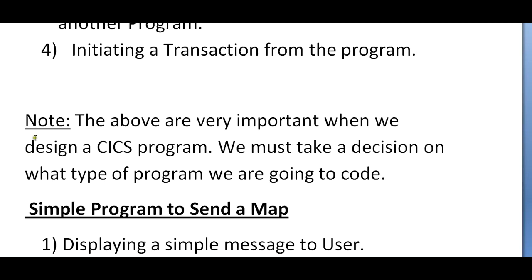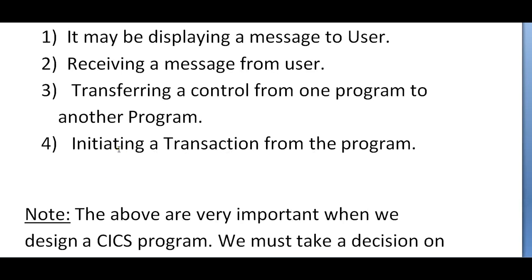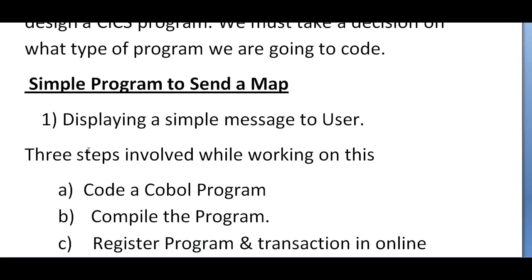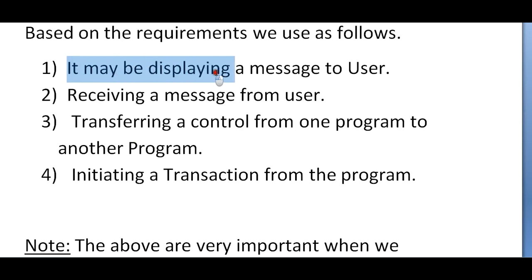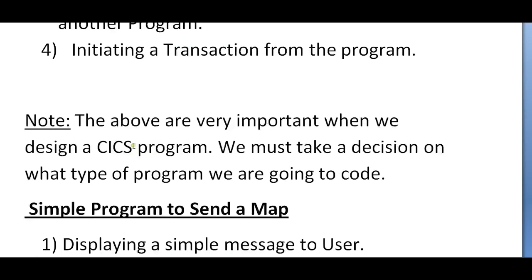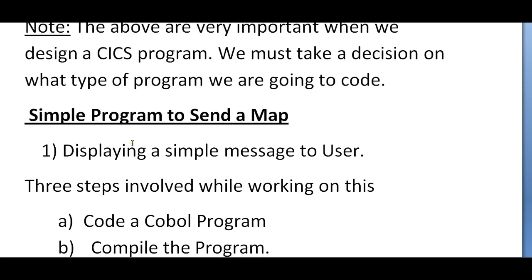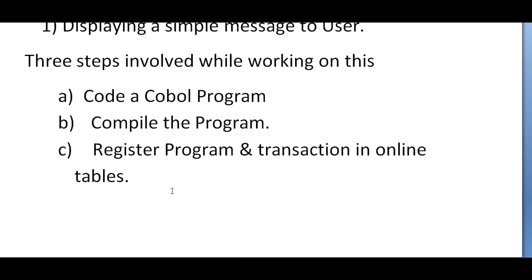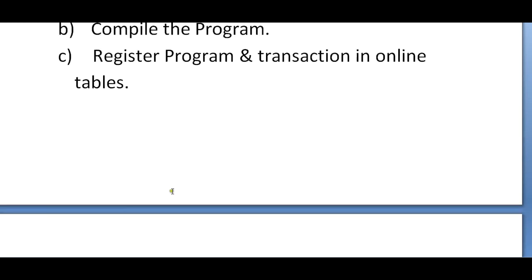These four types are very important when designing a CICS program. You must take a decision on what type of program you are going to code — it's your call. Now let's see a simple program to send a map. There are three steps involved for sending a simple map or displaying a message to the user: code the COBOL program, compile the program, and register the program and transaction in the online table.